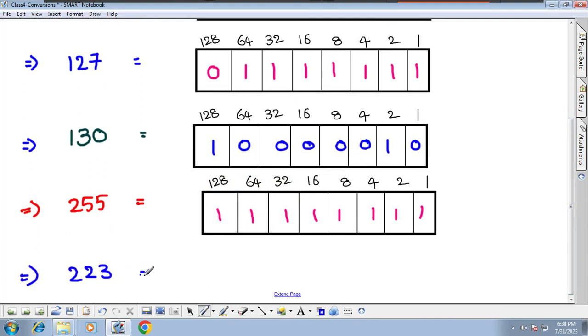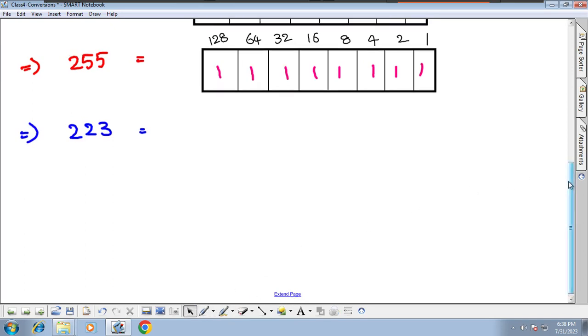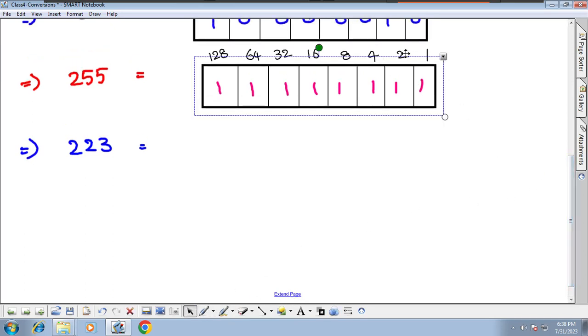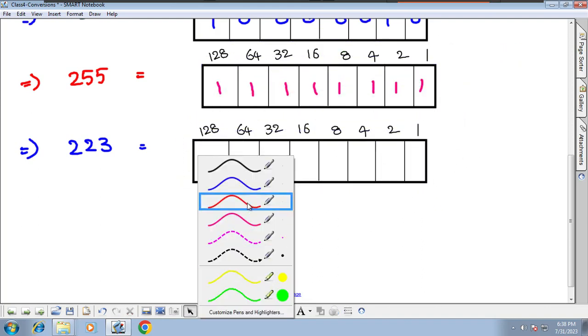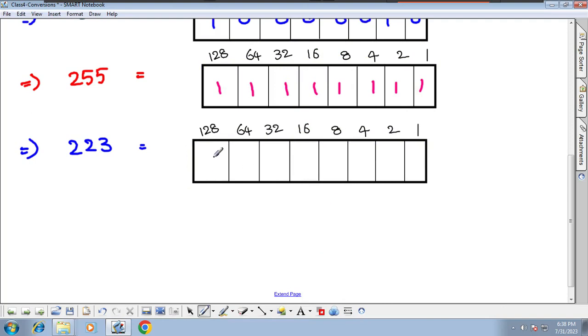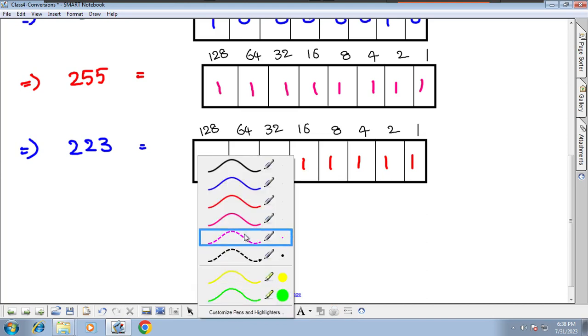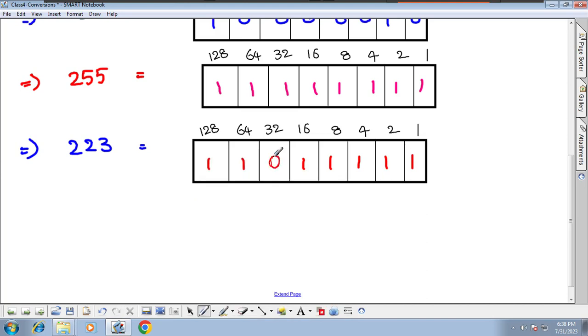With the help of this, we will understand 223. We have to find out the binary number of 223. How will it come? Shall we play now? What we do - see, if you apply all ones in 8 bits, it becomes 255. In 255, if you minus 32, what is this? 223. That's all, simple.